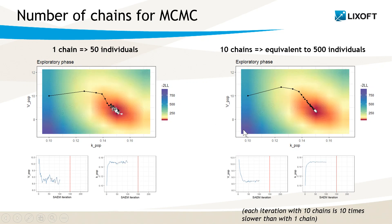If we look at the entire SAEM algorithm, we see that with more chains, there is less noise, we are more stable. This is good, but it of course comes to a price. With 10 chains, each iteration is 10 times longer than with one chain. So there is a balance to find.